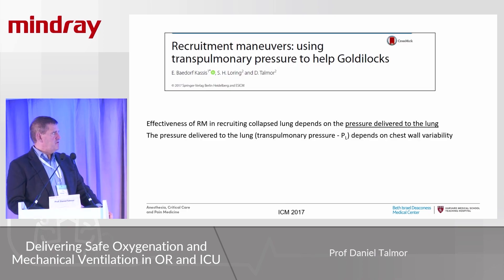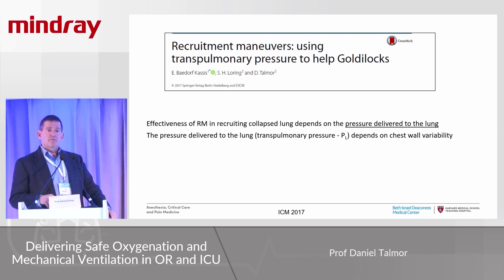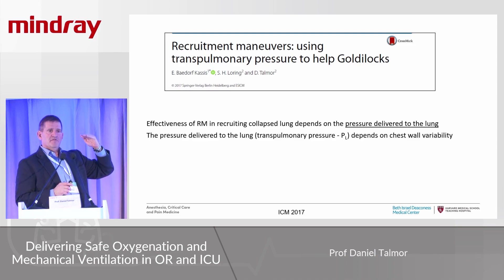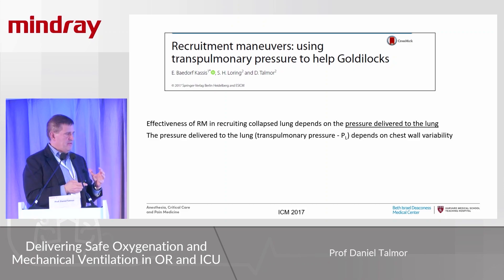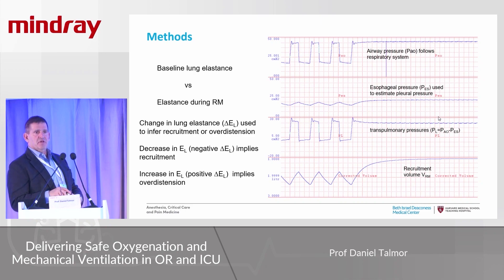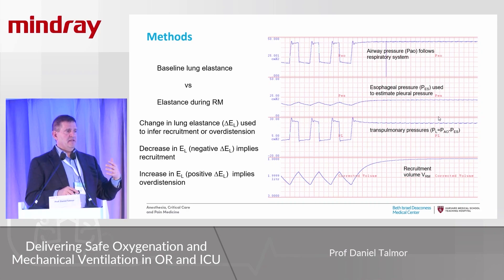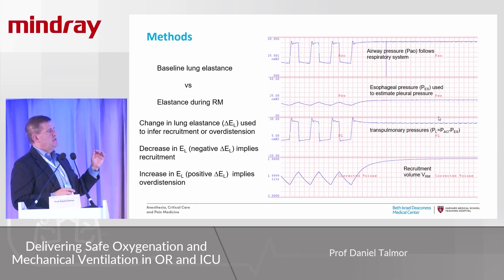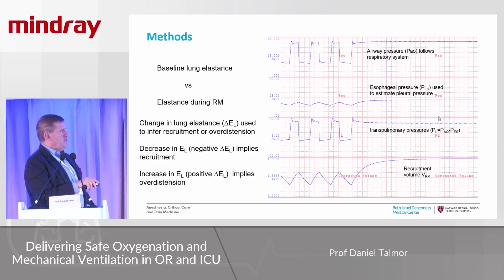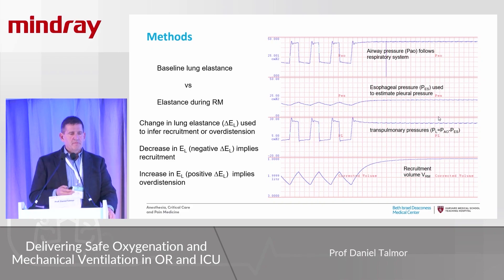We published a paper with colleagues Elias Bedorf-Kassis and Steve Loring looking at why recruitment maneuvers may fail. Using our EPvent1 database, we examined the delivered airway pressure during standardized recruitment maneuvers and compared it to the transpulmonary pressure — the pressure actually distending the lung. We measured lung elastance before and after the recruitment maneuver. A negative change in elastance indicated recruitment; a positive change indicated over-distension. This was possible because we had esophageal balloons measuring transpulmonary pressure.